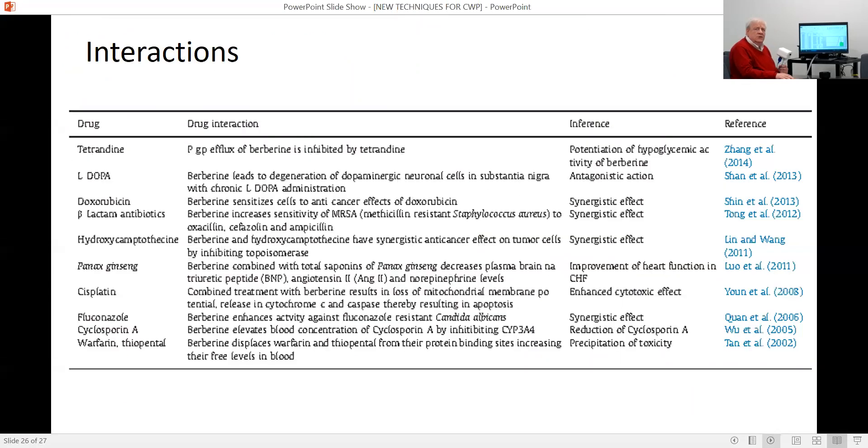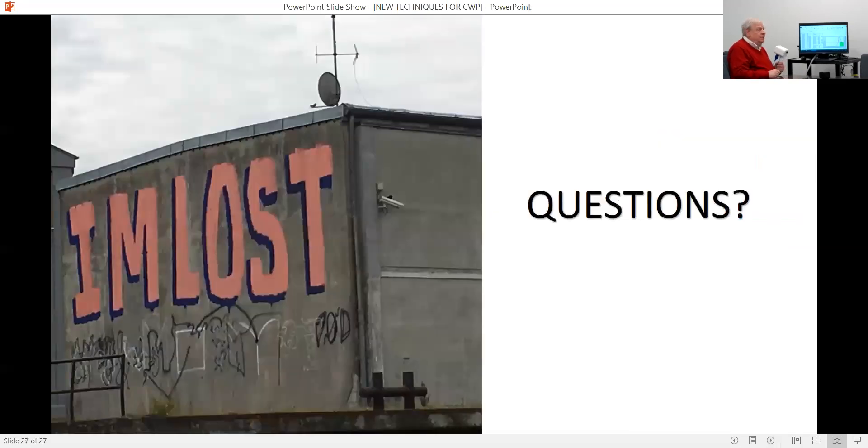And so here are some of the interactions. Some of the interactions in fact are good. It's similar in its effects and its mode of action to tetrandrine. If you're familiar with that, there was some work done in NIOSH back in the early nineties on tetrandrine. And in fact, tetrandrine is used extensively in China now for treatment of fibrogenesis.